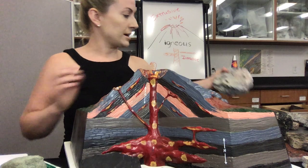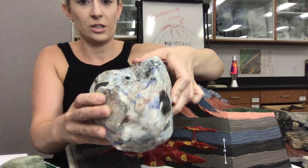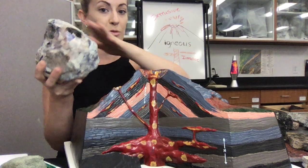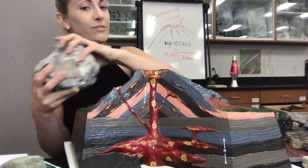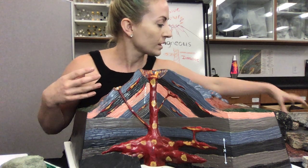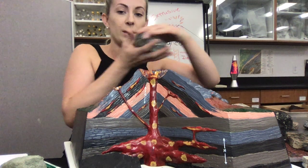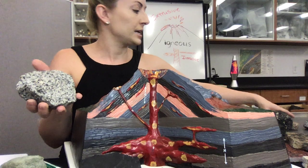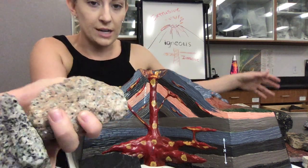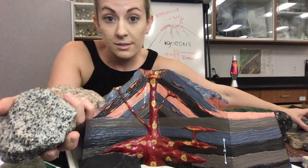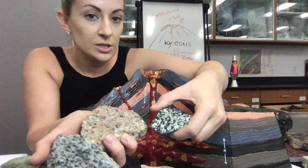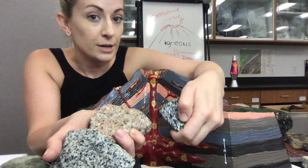Here we have really large-grained granite, which would be very clearly phaneritic — you can see the sides of those crystals. We also have smaller-grained granites where the grains are smaller, but you can still see the individual crystals with the naked eye, so these are also phaneritic.